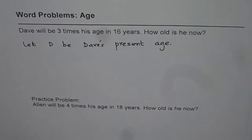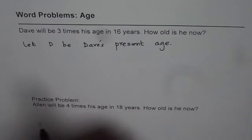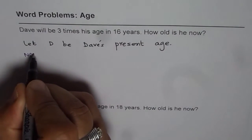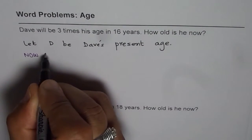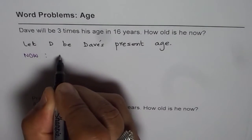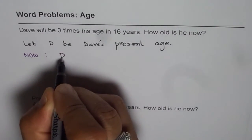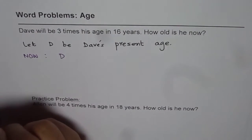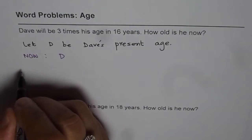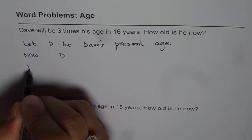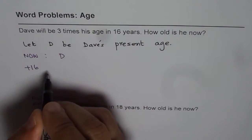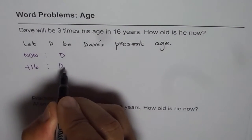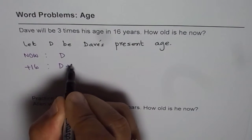So you have to think like this. What is the age of Dave? It is D. Now after 16 years, what will be the age? So plus 16. After 16 years, Dave's age will be D plus 16.